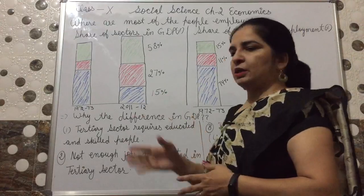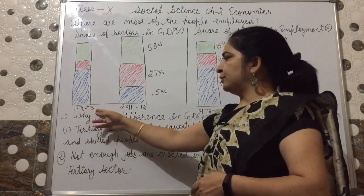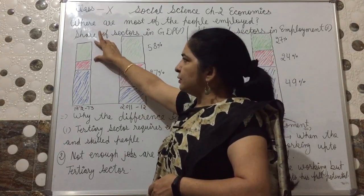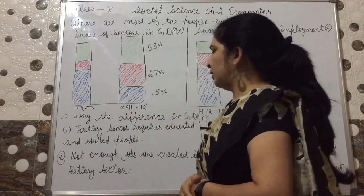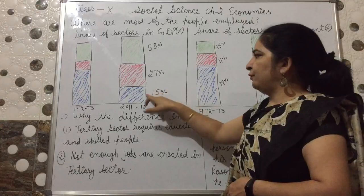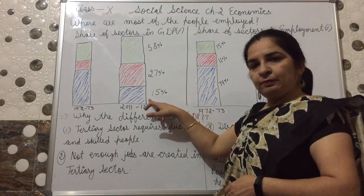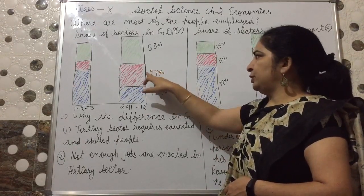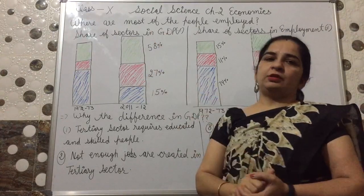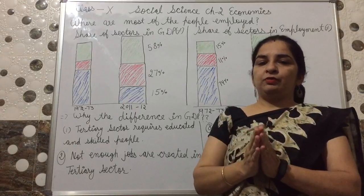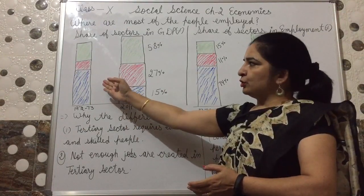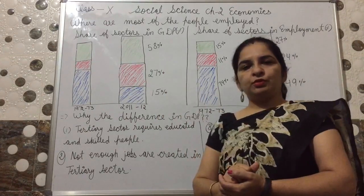Have a look at this graph — we covered this in the last lecture as well. In 1972-73, this shows the contribution of primary, secondary, and tertiary sectors in GDP. Now if we talk about 2011-12: only 15% revenue came from the primary sector, 27% revenue from the secondary sector, and 58% revenue in GDP came from the tertiary sector. So what we observe is that earlier the primary sector contributed more to GDP, but nowadays the tertiary sector contributes the most.